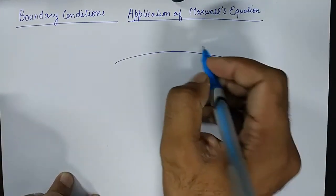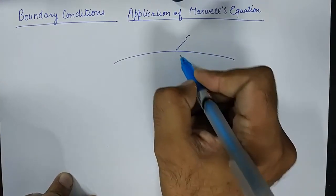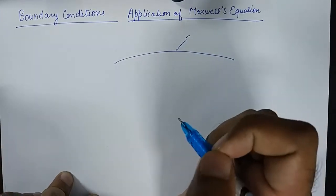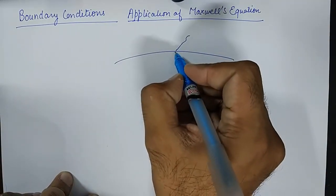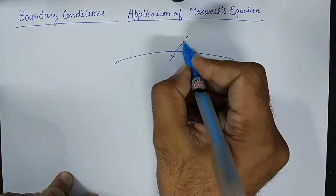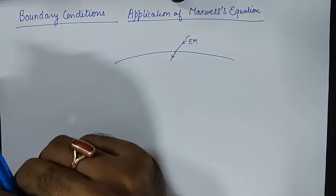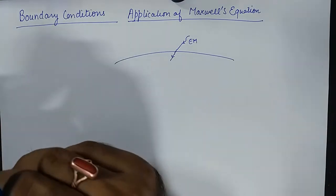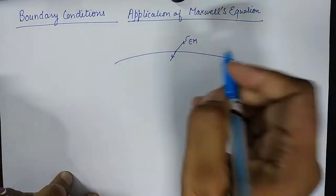Whenever an electromagnetic wave tries to intrude from one medium to the other, there are some characteristic changes in the wave at the interface of the boundary, and those characteristic changes are studied and monitored using boundary conditions.